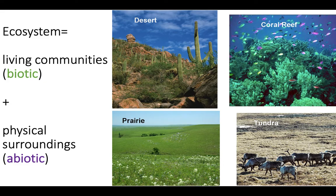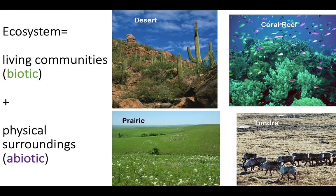First of all, we need to understand what an ecosystem is, and that's just a combination of the living things and the non-living things in a given area. When I say living things, in environmental science we use the term biotic. Biotic refers to anything that's made of living tissue, meaning that it could be alive or it could be dead, but as long as it's made of living tissue, that's fine. So a tree, a dead tree, a squirrel, a dead squirrel, a plant — all those things are biotic. Meanwhile, non-living things — things that aren't alive and never were alive, never will be alive — are what we call abiotic. These are things like rocks, soil, water, air, sunlight, heat, etc. If you combine the physical component, the abiotic components, and the living component, the biotic component together, you get an ecosystem — that is the combination of all the different species plus their physical surroundings.